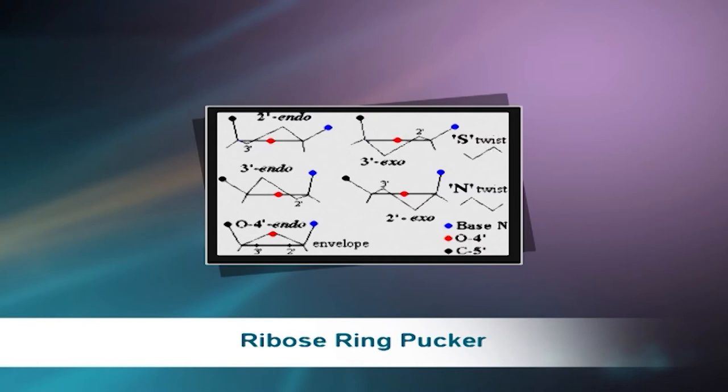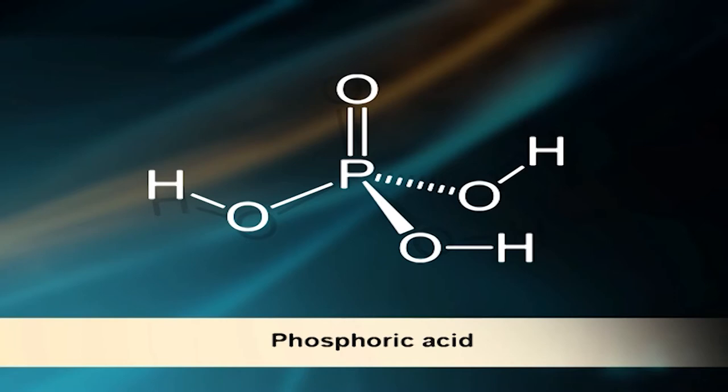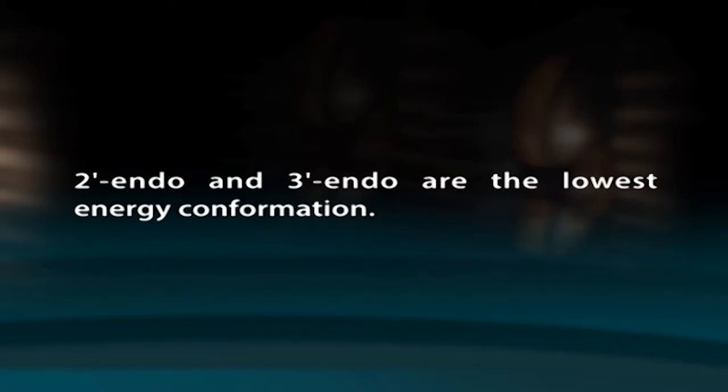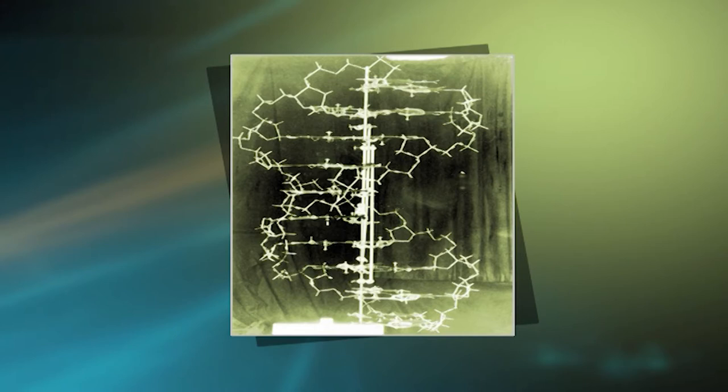The figure shows ribose ring pucker. Endo pucker has a major displacement on the beta phase where C2' or C3' are turned out in the direction of O5', the same side as C5' and the base end. Exo pucker goes to the opposite side of the ring. 2'-endo and 3'-endo show the lowest energy conformations. The Watson-Crick model of DNA adopts the 2'-endo conformation, whereas RNA and the A form of DNA adopt the 3'-endo twist.